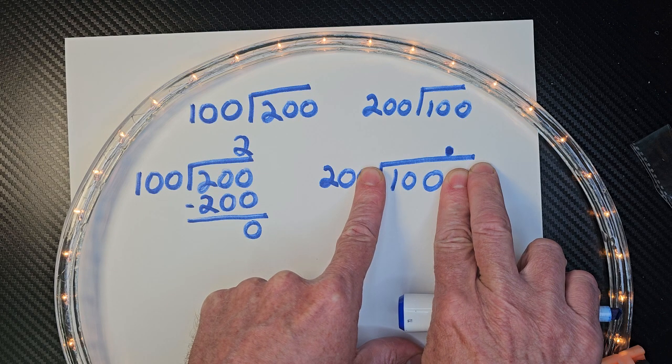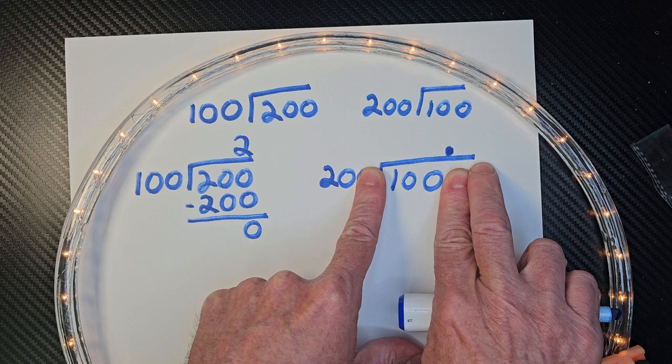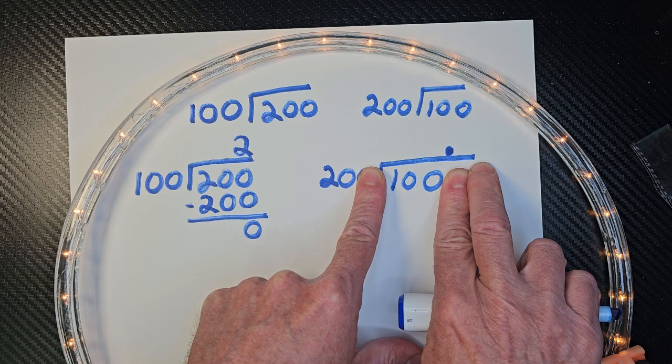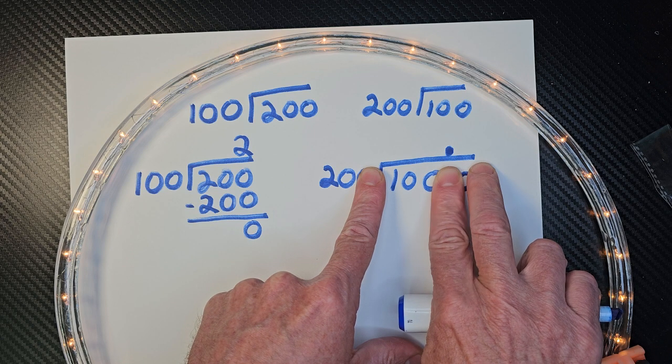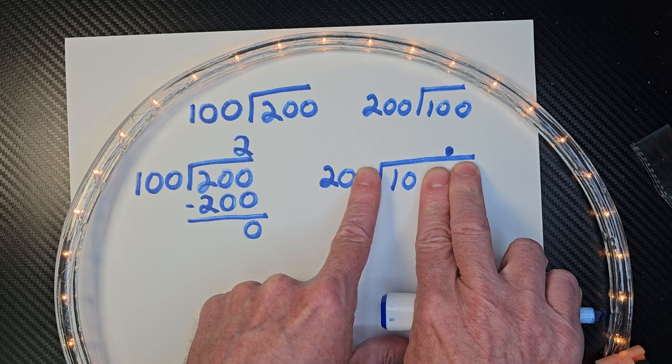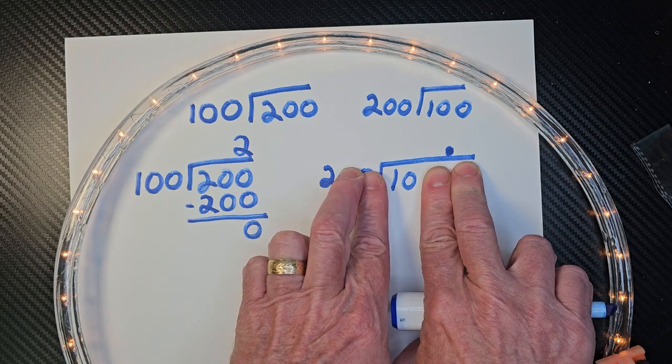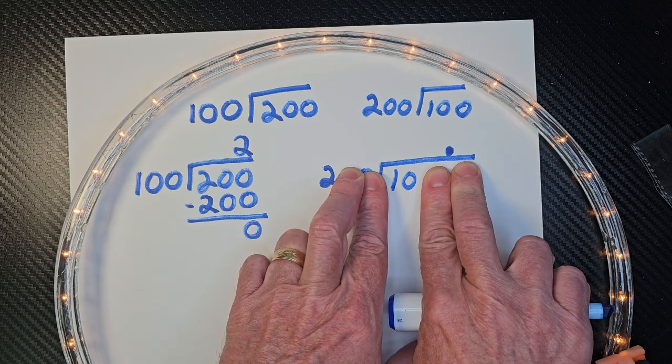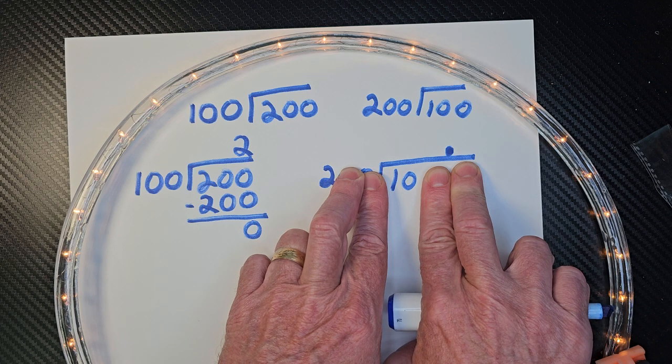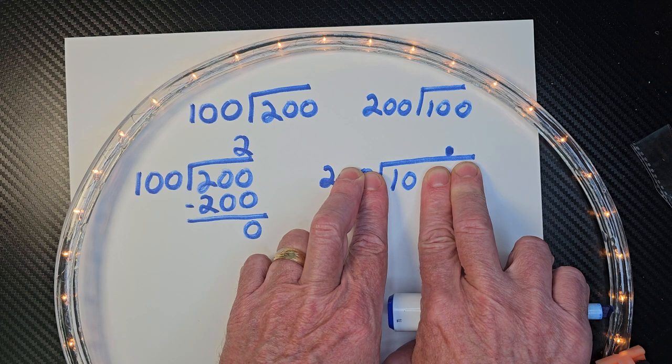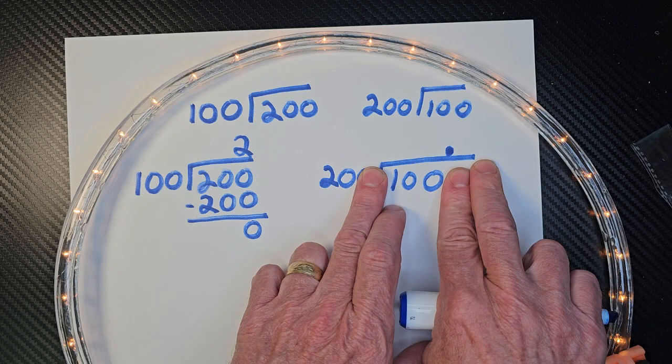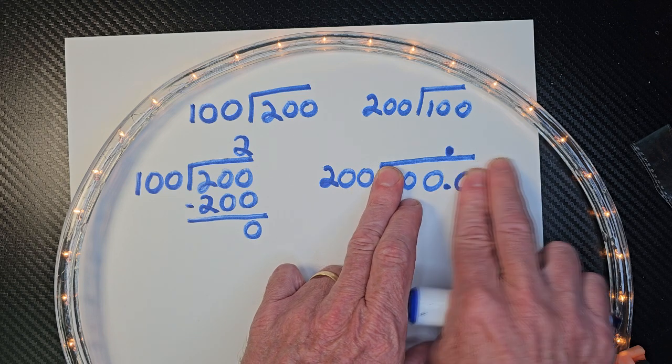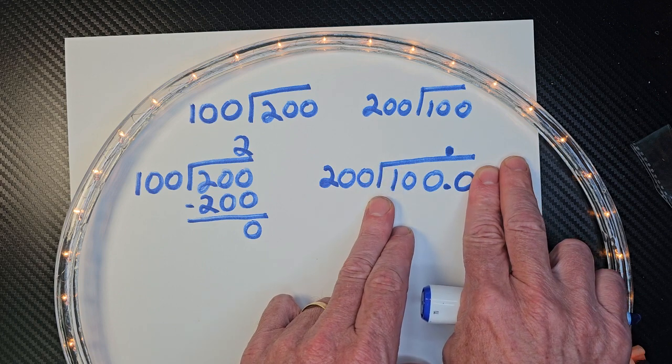So how many times can I put 20 into 100? How many times? So 20. And if you get a little confused on that one, let's move this zero over here. And let's take out these two zeros. How many times can I put 2 into 10? Five times, right? So I can put 20 into 100 five times. And I can put 200 into 1000 five times.